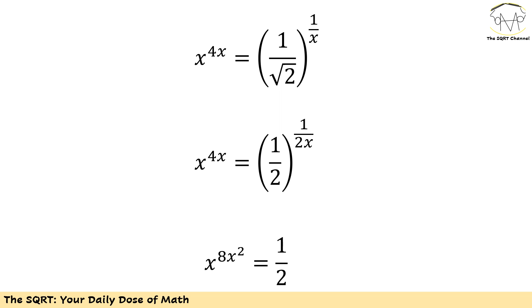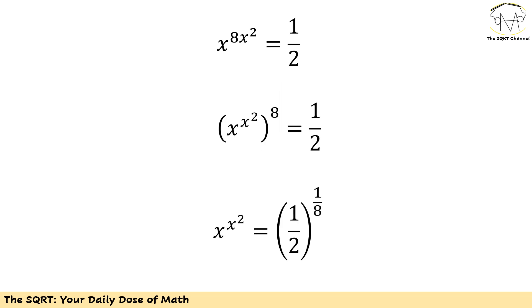We can take the power of 2x from both sides, giving us x^(4x · 2x) = 1/2, or x^(8x²) = 1/2. Now I am going to write x^(8x²) as (x^(x²))^8.